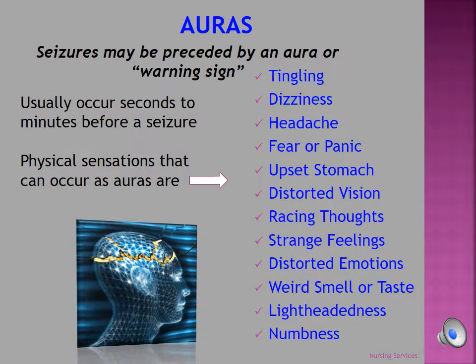Seizures may or may not be preceded by an aura or a warning sign. Just as triggers vary from person to person, the occurrence of an aura varies as well. When auras occur, they usually begin seconds to minutes before the seizure and may include physical sensations like tingling, dizziness, headache, fear or panic, upset stomach, distorted vision, racing thoughts, strange feelings, distorted emotions, weird smells or taste, or lightheadedness or numbness.